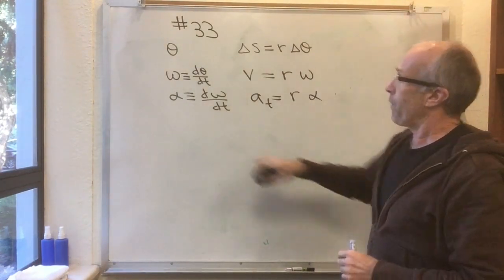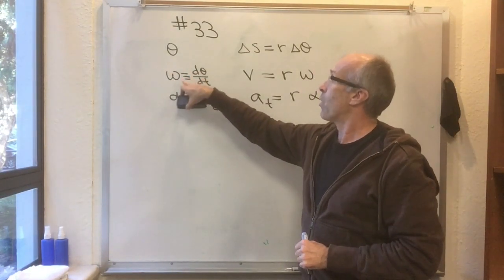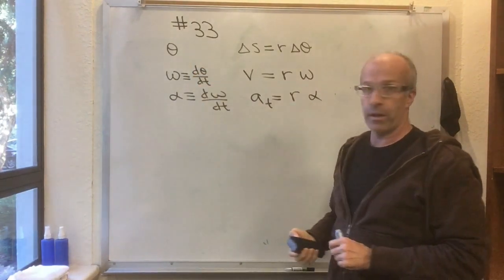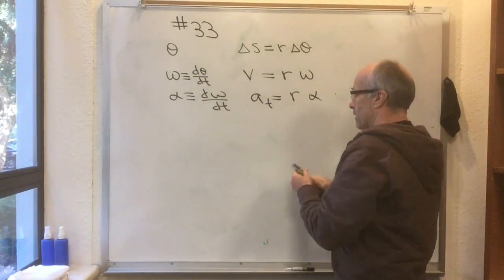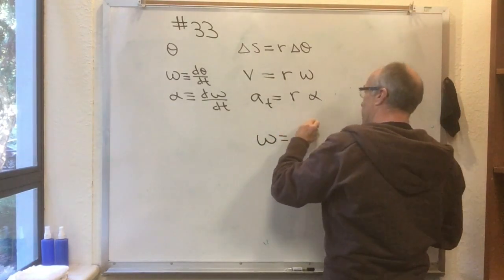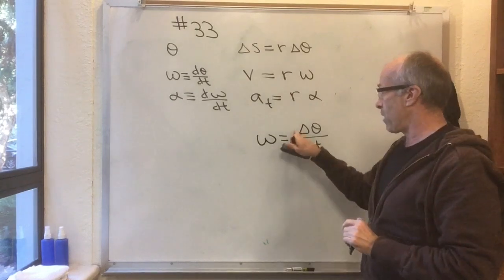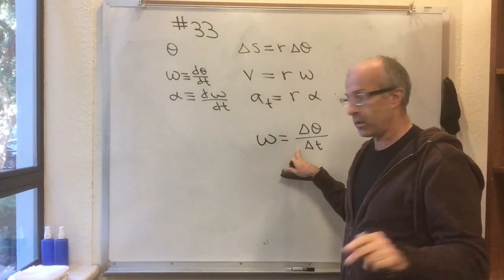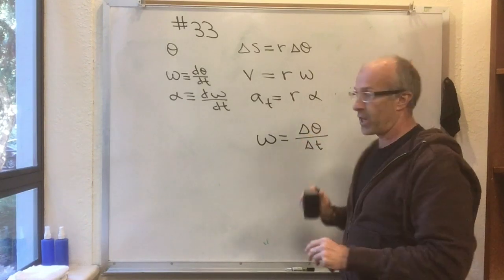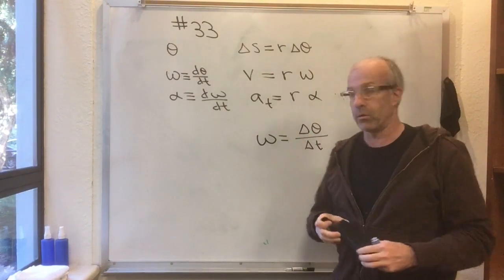Something that we define: omega is, by definition, the derivative with respect to time of the angle. Sometimes you'll see formulas like omega equals delta theta over delta t. Beware — that is only good if you have a constant rate of change, or if you're taking the limit as delta t goes to 0.